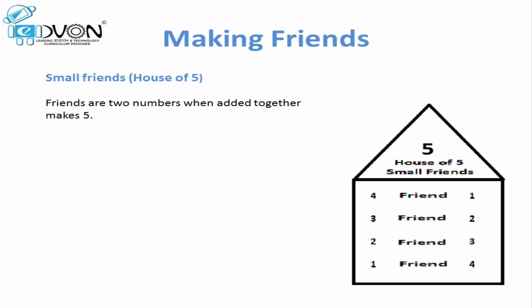How we make friends: numbers when added together make five. So we will select two numbers that make five. If we talk about four, which number should we add to make it five? Yes, we add one — four plus one equals five, so four and one are friends of each other. For number three, we add two — three plus two equals five, so three and two are friends of each other.